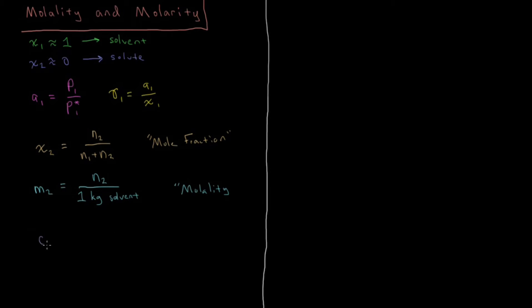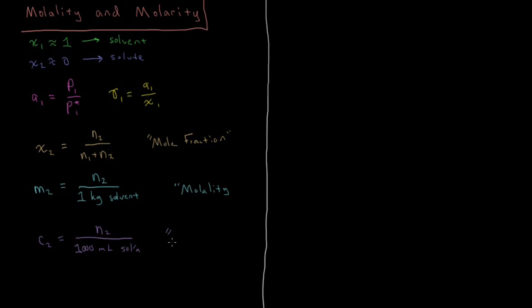In addition to molality — signified by lowercase m — we have molarity, signified by lowercase c, which we should remember from general chemistry. Molarity is the number of moles of solute per every 1000 milliliters of solution. So if we have 10 moles in 10,000 milliliters or 10 liters of solution, that would be a one molar solution. That is molarity.